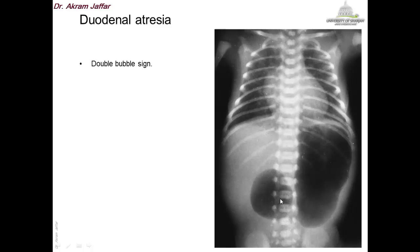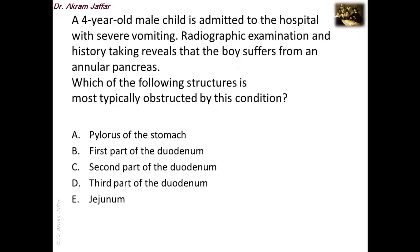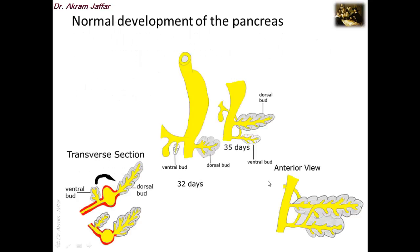This is another case: a four-year-old male child admitted to the hospital with severe vomiting. Radiographic examination and history reveal that the boy suffers from annular pancreas — another condition that does not necessarily present early and may even present in adults. Which of the following structures is most typically obstructed in this condition? It is not the pylorus, not the first or third part of the duodenum, not the jejunum — it is the second part of the duodenum.